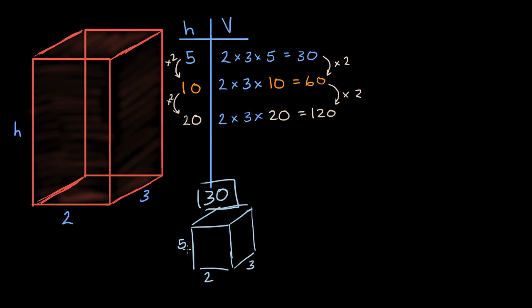But now let's double two of the dimensions. Let's make this into a 10 and let's make this into a four. So this is going to be a four. This is still going to be a three. And our height is going to be a 10. I haven't drawn it perfectly to scale, but hopefully you get the idea. So this is our height at 10.